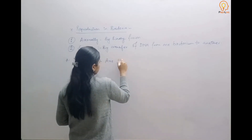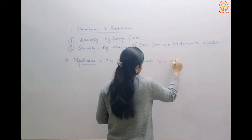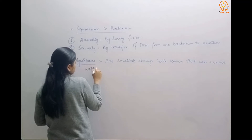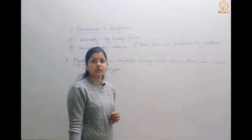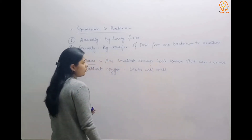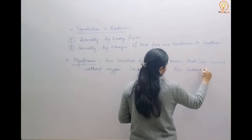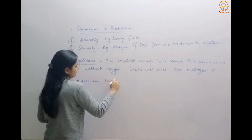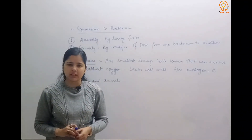Mycoplasma are the smallest living cells known that can survive without oxygen and lack a cell wall. They are also pathogenic to many plants and animals. This was about the Kingdom Monera category, in which we covered all categories of bacteria and looked at mycoplasma.